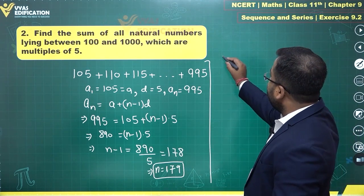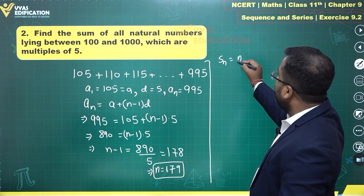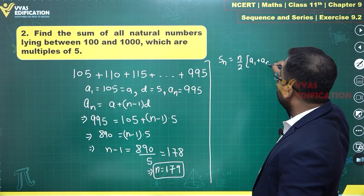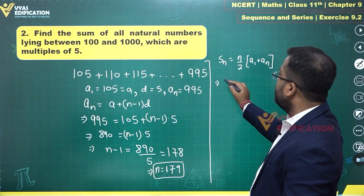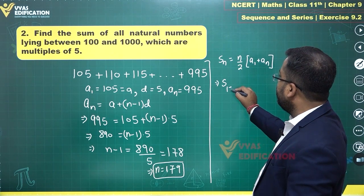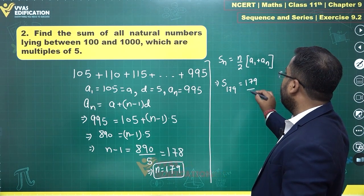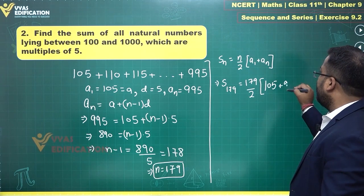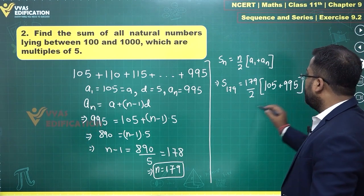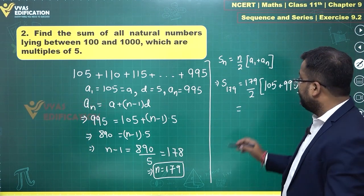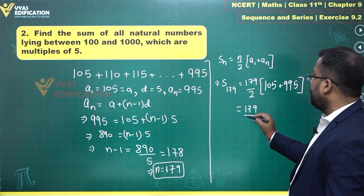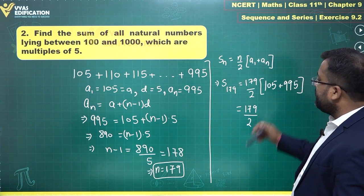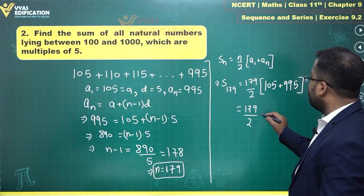Sum of all these natural numbers SN will be equal to N by 2 times A1 plus AN. This is first term plus last term which gives me S179 will be equal to 179 by 2, the first term is 105 plus the last term is 995.